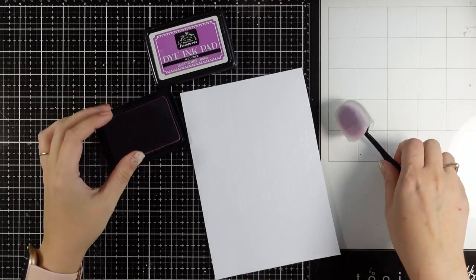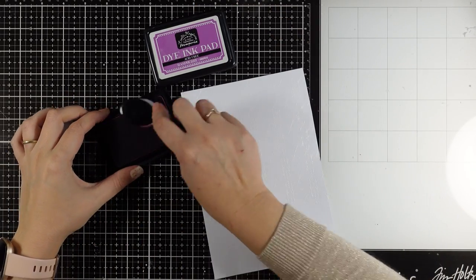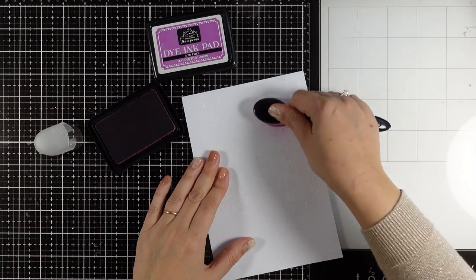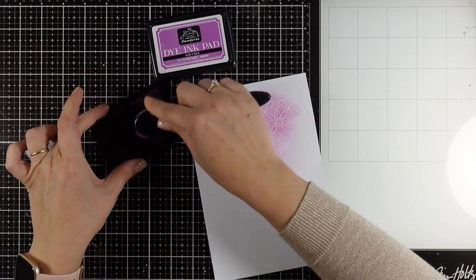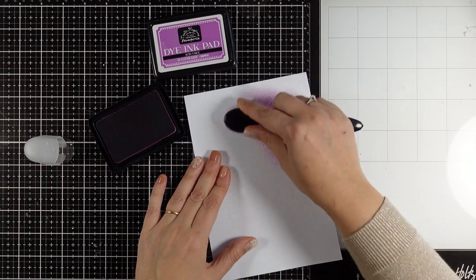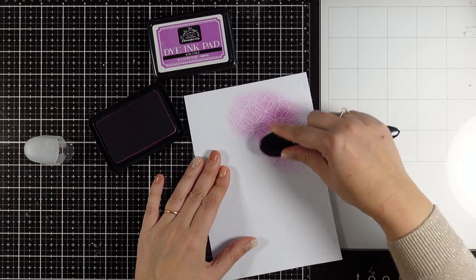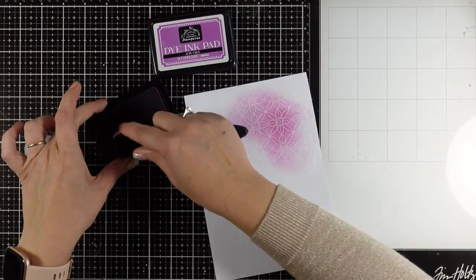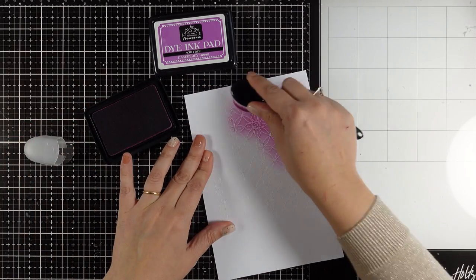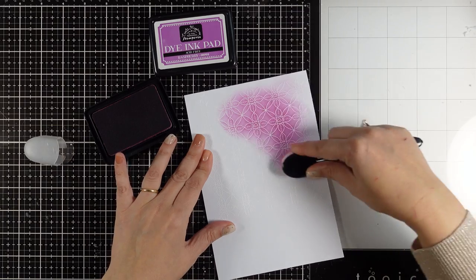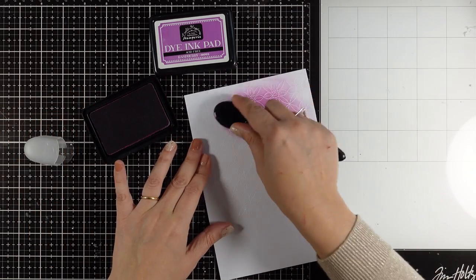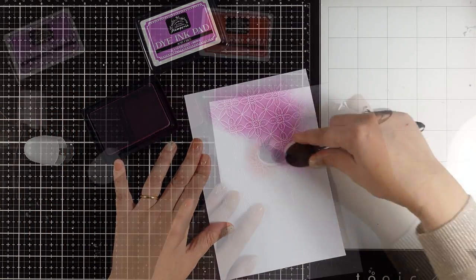Now let's have some fun with emboss resist. You can do that with your dye ink pads. I'm using one of the new colors from my latest Stamperia collection, and this is raspberry, a beautiful color. I'm going to mix it by using a blending brush to get a lovely soft effect, which also allows me to blend other colors easier when they touch each other.